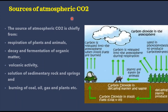What are the sources of atmospheric carbon dioxide — how does CO2 come to be present in the atmosphere? The sources of atmospheric carbon dioxide are chiefly: respiration of plants, decay and fermentation of organic matter, volcanic eruptions, solution of sedimentary rocks and springs, and burning of coal, oil, gas, and plant matter. These are the different sources by which atmospheric carbon dioxide is maintained.